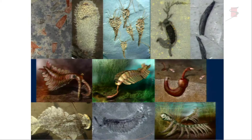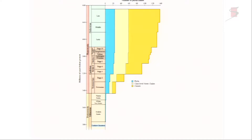These are illustrations of some of the variety of things we've seen in the Cambrian. Some of them, like Opabinia and Anomalocaris, are ones that Ali talked to you about in her talk, and some of the others will come up later on.